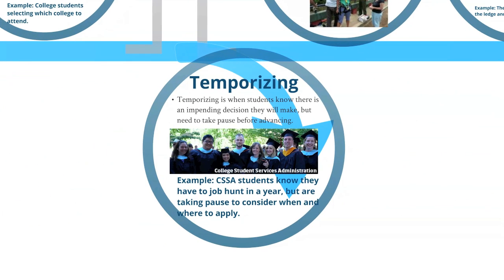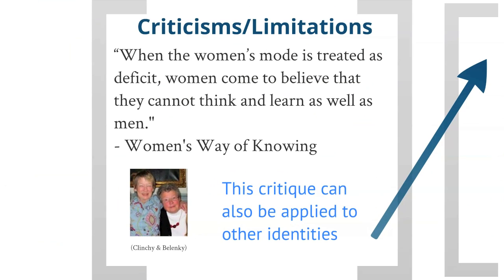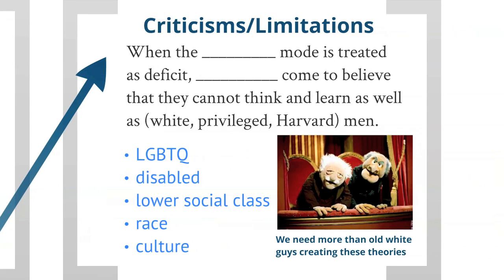The third deflection is temporizing. An example of this is CSSA students who know they have to job hunt in a year, but are taking pause to consider when and where to apply. One criticism or limitation of Perry is from women's way of knowing. When the woman's mode is treated as deficit, women come to believe that they cannot think and learn as well as men. This critique can also be applied to other identities. When the LGBTQ mode is treated as deficit, LGBTQ individuals come to believe that they cannot think and learn as well as white privileged Harvard men. We need more than old white guys creating these theories.